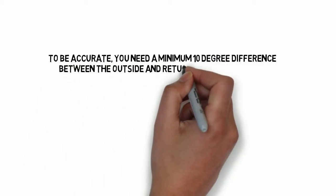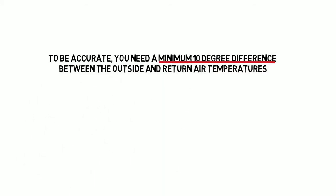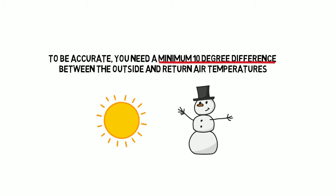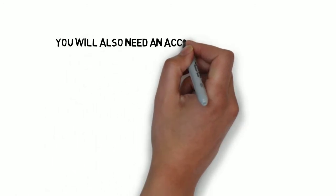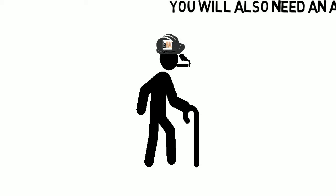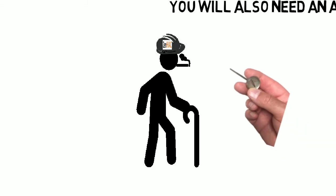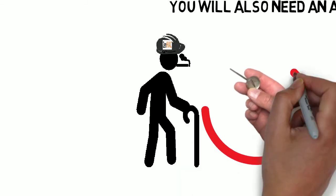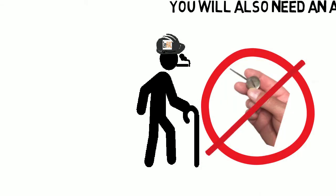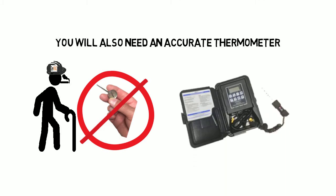To be accurate, you need a minimum 10 degree difference between the outside air temperature and the return air temperature. It doesn't matter if it's warmer or colder outside — it just has to be a 10 degree difference minimum. You're also going to need an accurate electronic thermometer with a probe that you can slip well into the air stream.